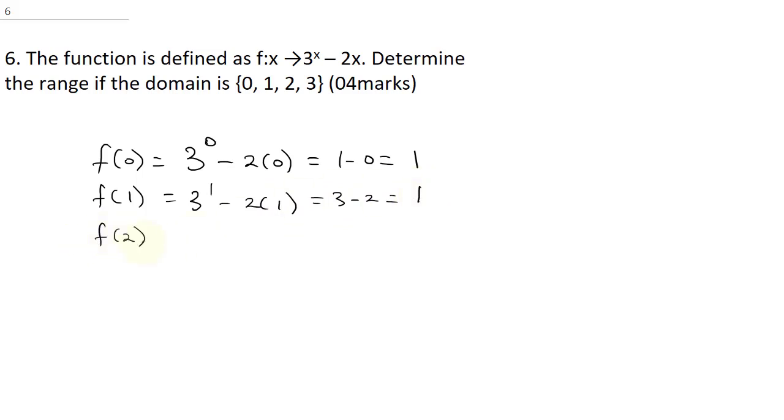When you find f of 2, this is going to be 3 raised to the power of 2 minus 2 times 2, which will be 9 minus 4. That will give us 5.